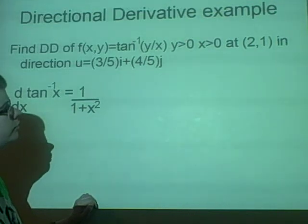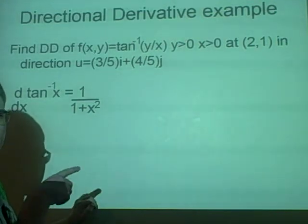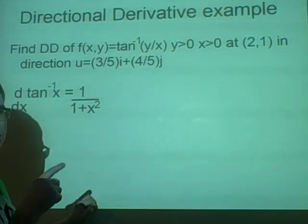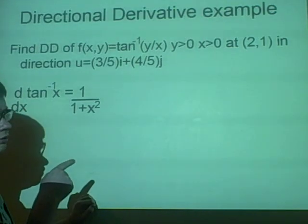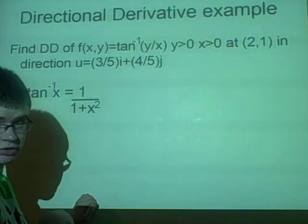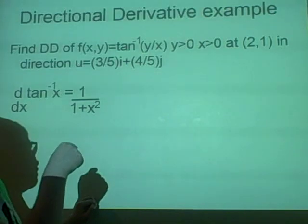So we move the power down, so it's -y·x⁻², because we have to decrease the power as well because we find the derivative. So it's -y/x².